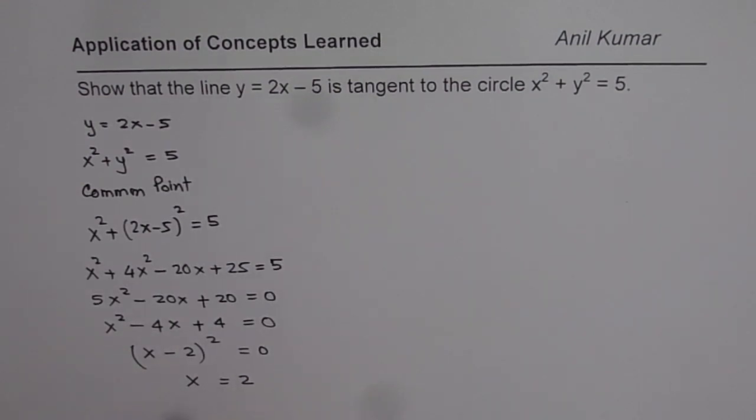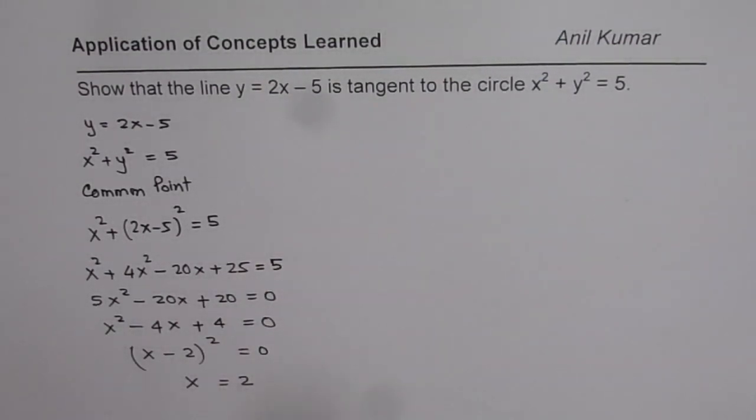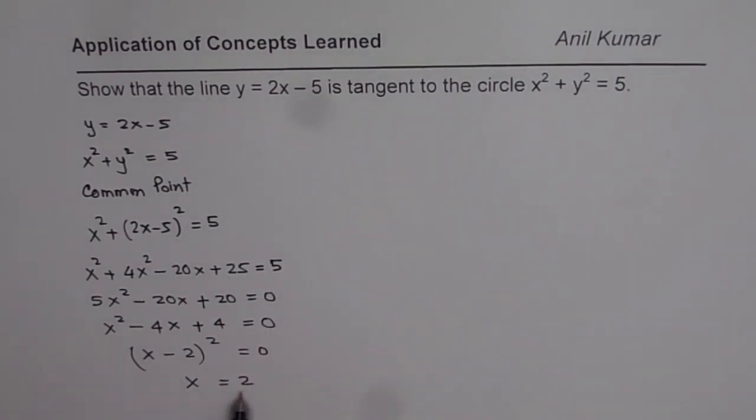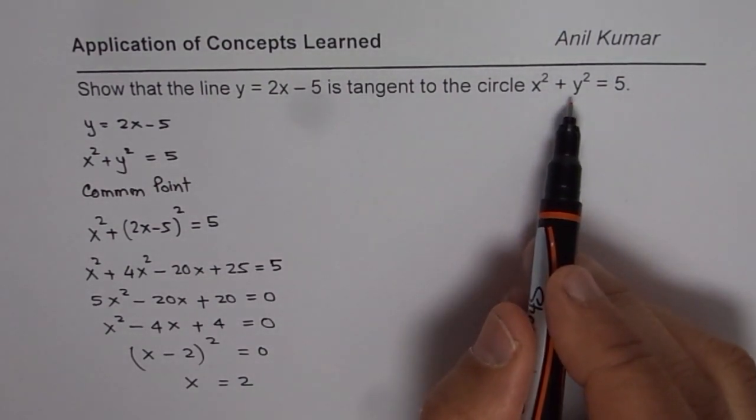So there is only one point, not two points, where the line intersects the circle. And therefore, we can say that since there is only one point that shows that at x equals 2, the line is tangent to the given circle.